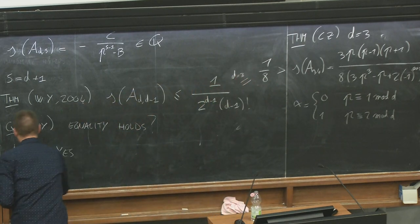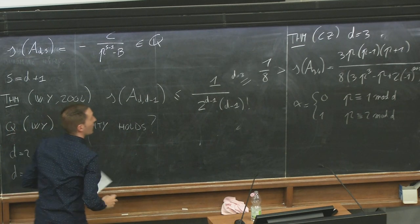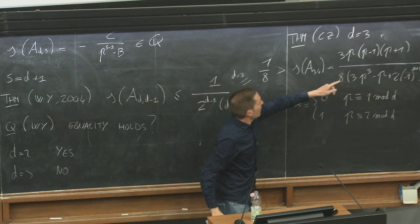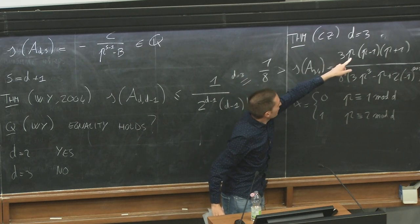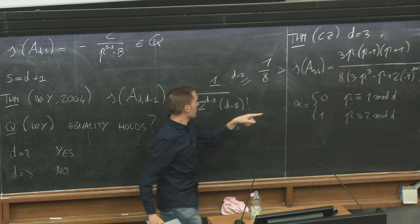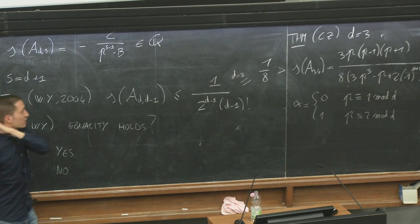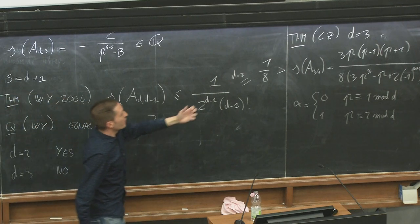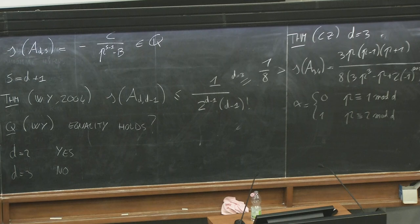For D = 2, equality holds and the F-signature of a quadric in three variables is 1/2. But for D = 3, we computed the precise value: S(A_{3,4}) = 3P(P−1)(P+1) / (8 · (3P^3 − P + 2)) · (−1)^{α+1}, where α = 0 if P ≡ 1 mod 3 and α = 1 if P ≡ 2 mod 3. In both cases this value is strictly less than 1/8, so the answer to the Watanabe-Yoshida question for D = 3 is no. However, taking the limit as P → ∞ gives exactly 1/8, so the bound is optimal in that asymptotic sense. Thank you for your attention.